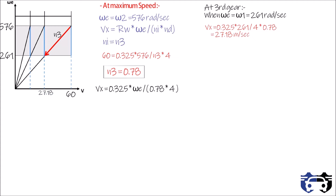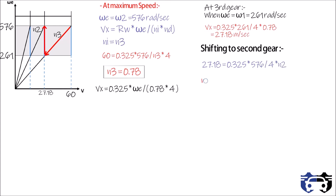Now we can't go below RPM omega 1, so at this point we shift to second gear and jump to the higher range omega 2 — that is 576 rad/s — at the speed of 27.18 m/s. From here we get: 27.18 equals 0.325 times 576 divided by 4 times n2, giving n2 equals 1.7218. The equation vx equals 0.325 times omega e divided by 4 times 1.7218 is then valid while we are in second gear.